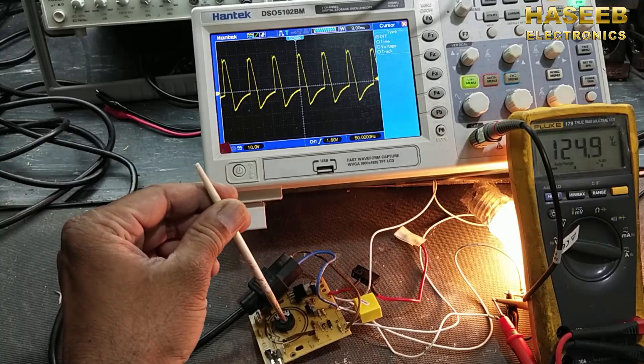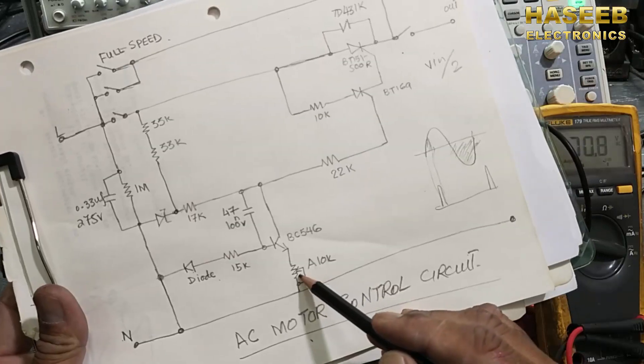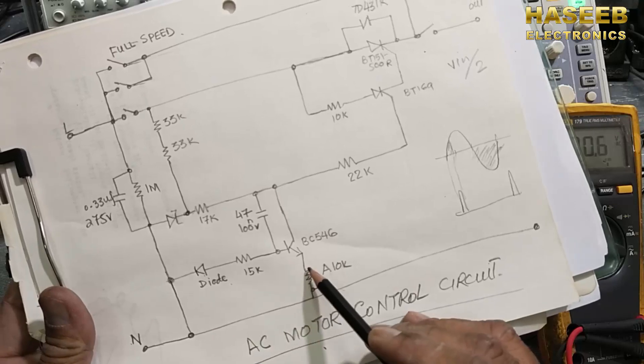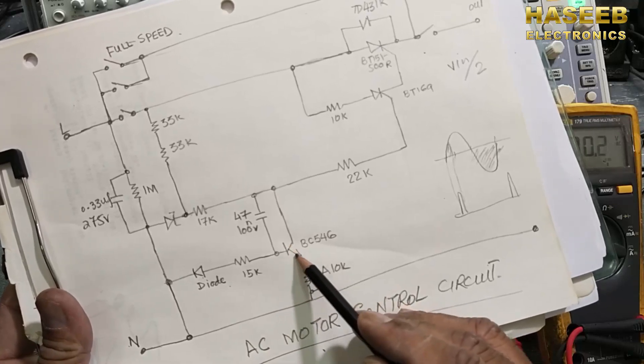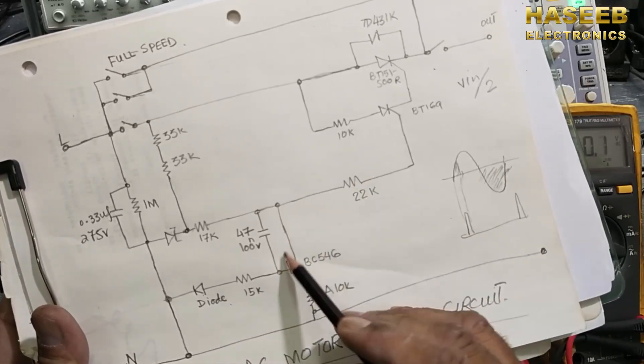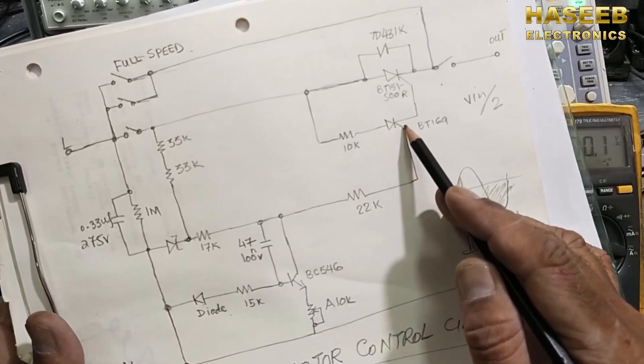If we adjust the potentiometer, the function when we adjust this potentiometer, actually we are adjusting the conduction of this transistor and we are raising up the voltage at this SCR.